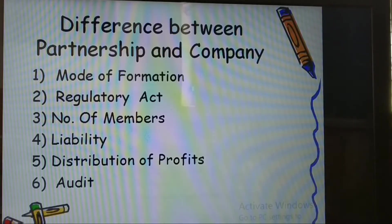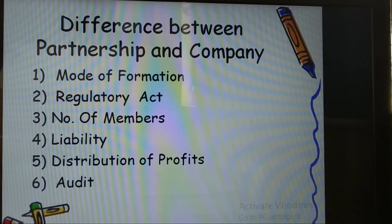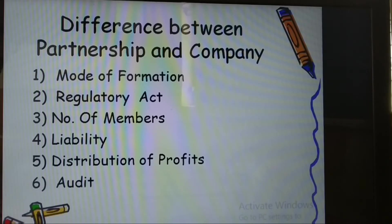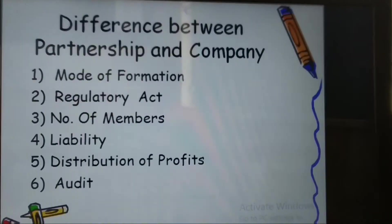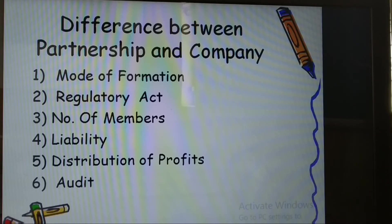Regarding liability: the liability of partners in a partnership is unlimited — not restricted to any extent. In a company, the liability of members is limited to the amount of shares held by them, or the amount guaranteed to be paid on winding up in the case of companies limited by guarantee. However, in some exceptional cases, companies may have unlimited liabilities, in which case the liability of members is also unlimited.